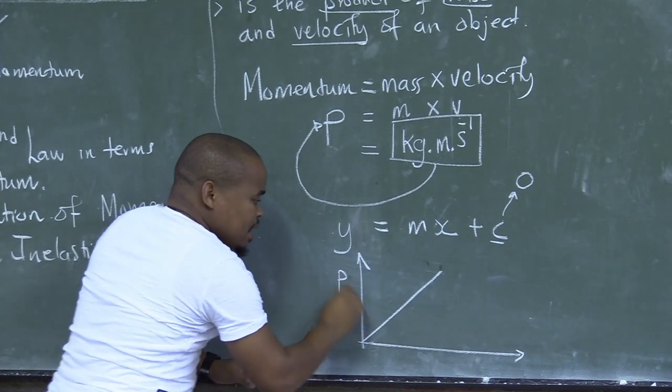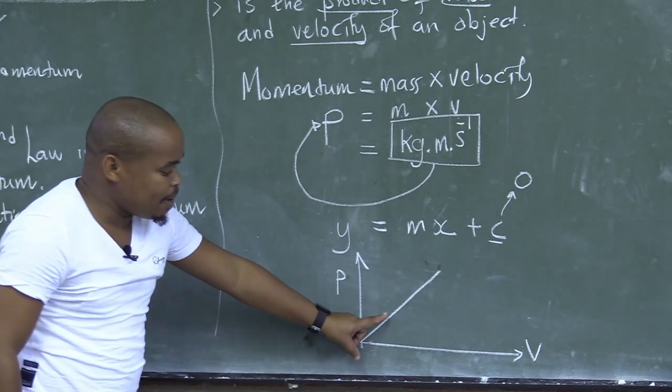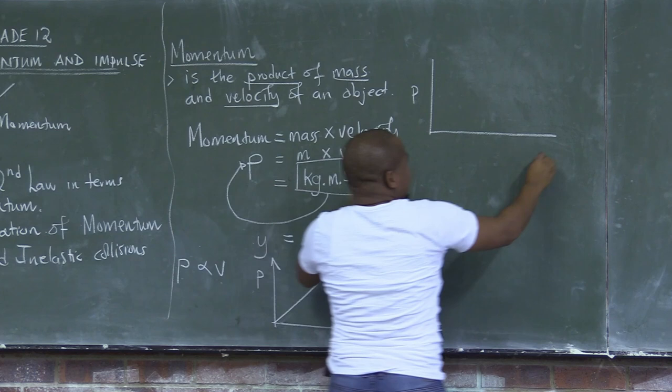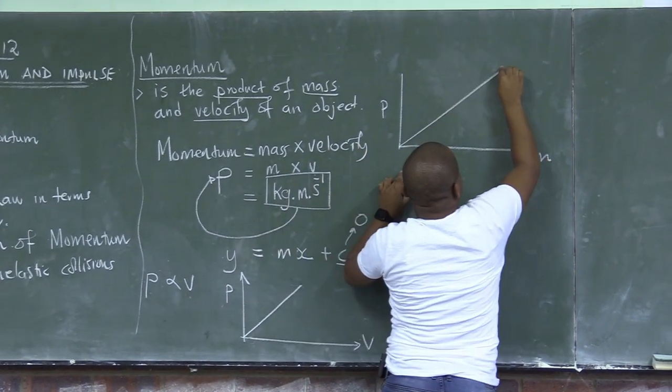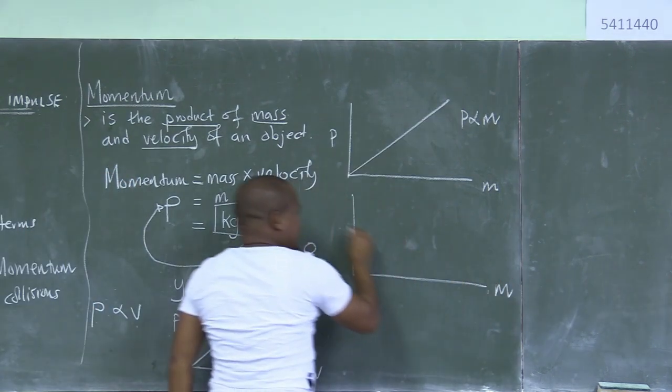If you know P and you know V, that indicates M will be constant. If we know P and we know M, V will be constant. P is directly proportional to M. If we know M, we know V.